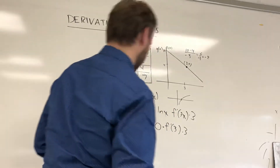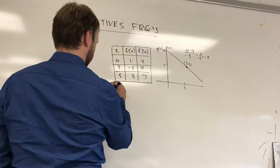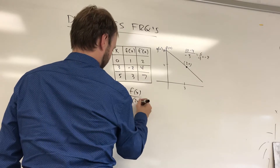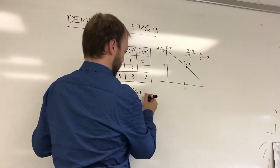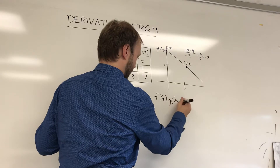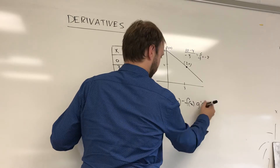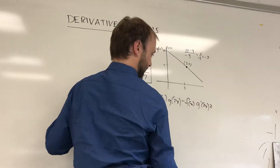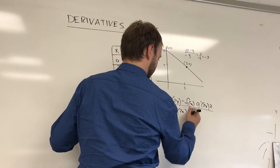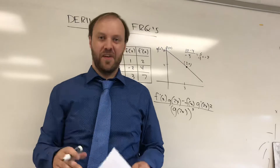They could also ask the quotient rule. Something like k of x equals f of x over g of 2x. The quotient rule says: take the derivative of the top times the bottom minus the top times the derivative of the bottom — that would be g prime of 2x, and you multiply by the derivative of the inside function, so multiply by 2. It's all over the denominator squared, so g of 2x squared. Then they might ask you to evaluate at a value and you can substitute numbers in.